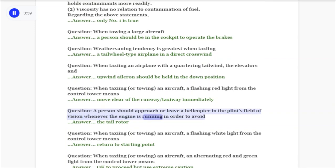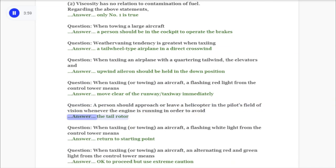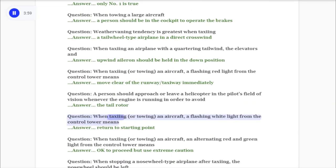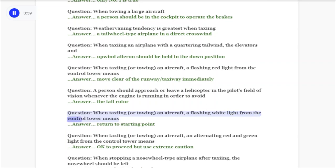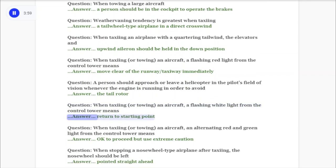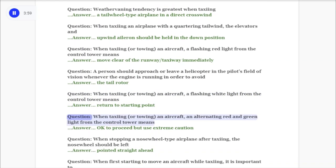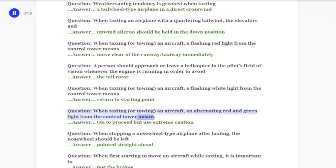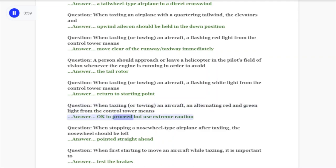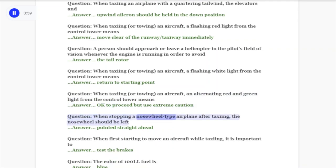Question: When taxiing or towing an aircraft, a flashing white light from the control tower means? Answer: Return to starting point. Question: When taxiing or towing an aircraft, an alternating red and green light from the control tower means? Answer: Okay to proceed, but use extreme caution.